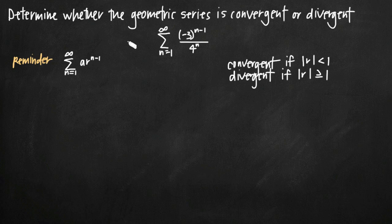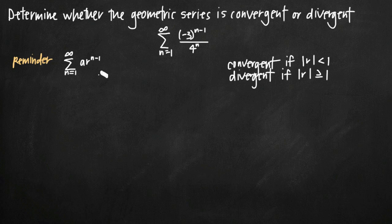The easiest way to use this geometric series convergence test is to first expand the series given in the definition. We do that by plugging in values of n starting with n equals 1, then higher and higher values of n to get the first couple terms. This makes it much more apparent what kind of series a geometric series actually is.